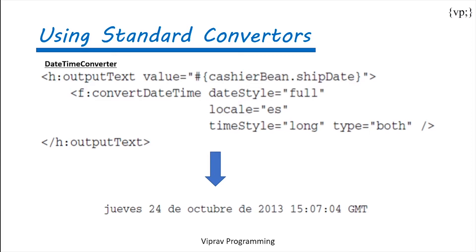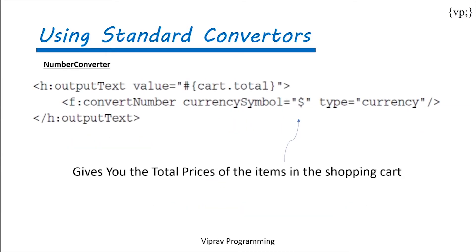Then there's number converting, which in this example gives you the total prices of the items inside the shopping cart. One thing you want to make sure is that the stuff in your Java bean is under the java.lang.Number tree. That means whenever you're passing stuff through this, you want to make sure that it's a number, not a string or a Boolean or something.